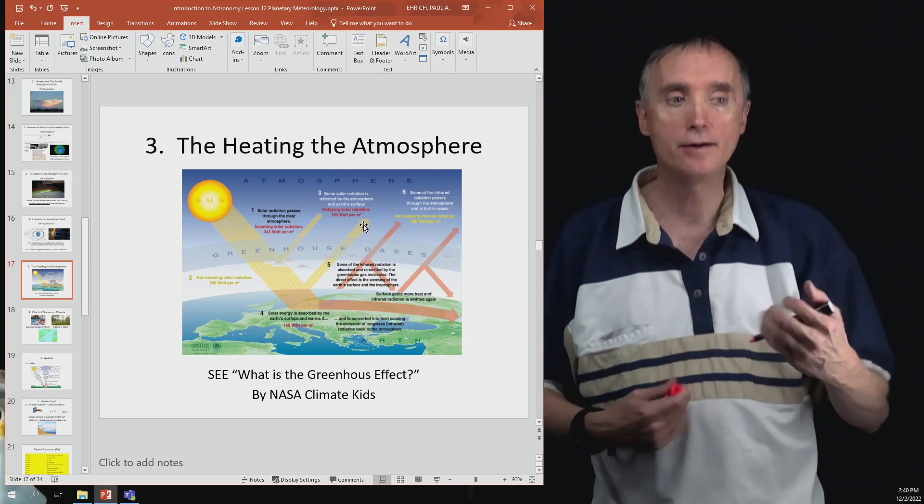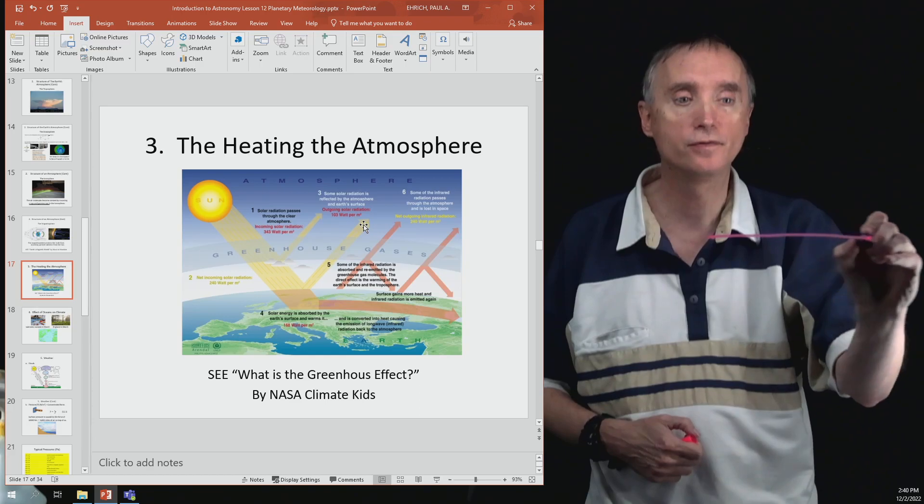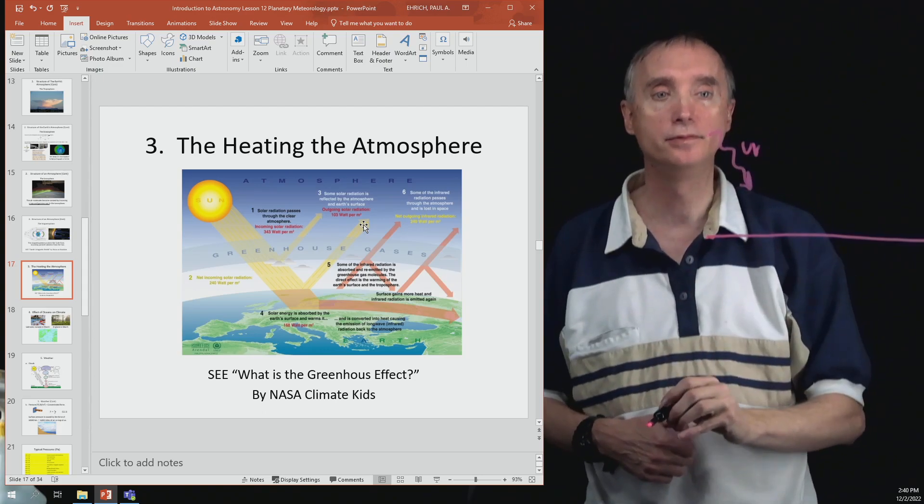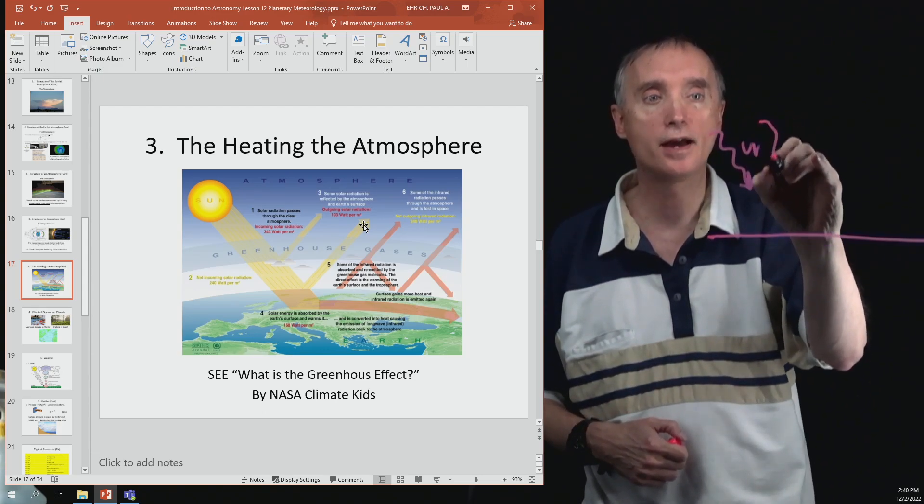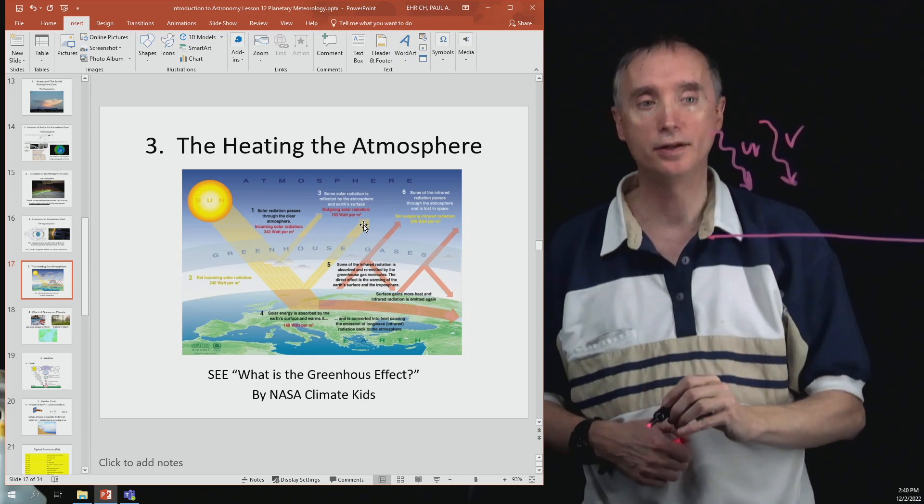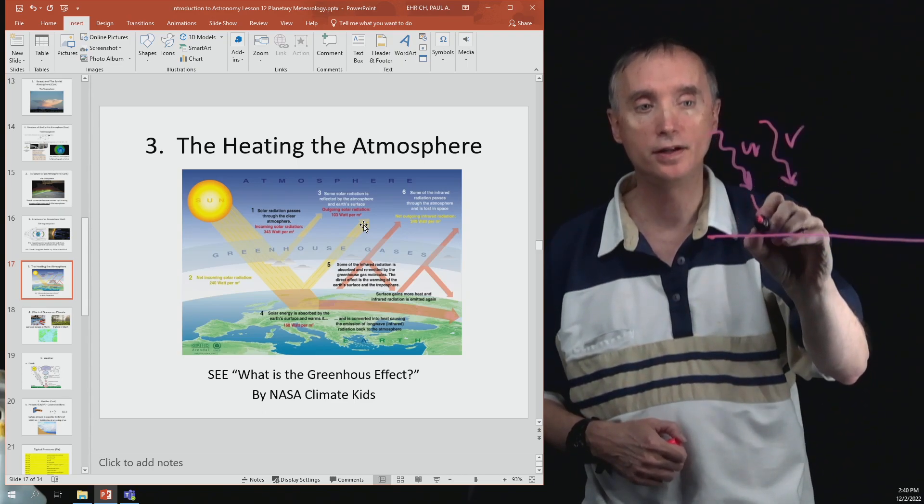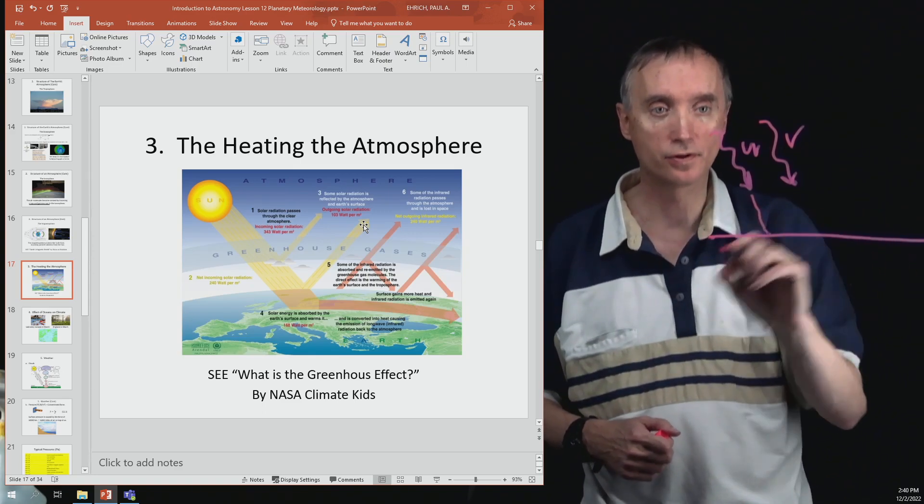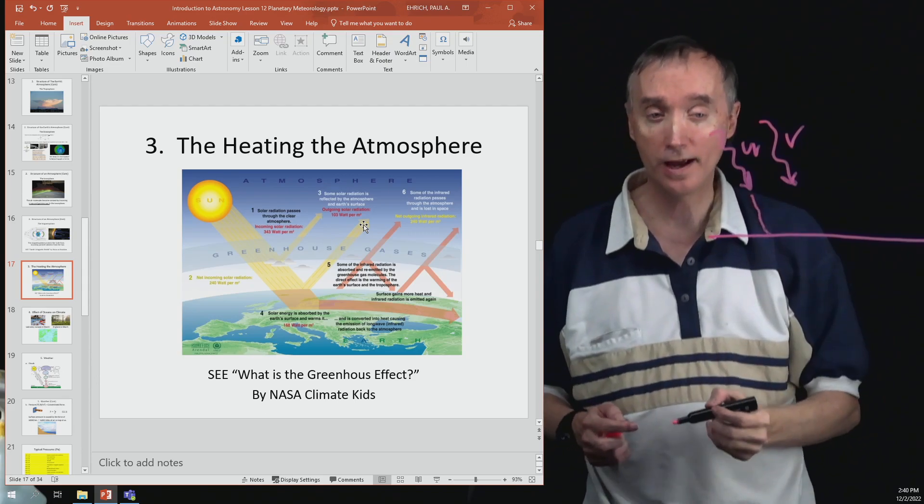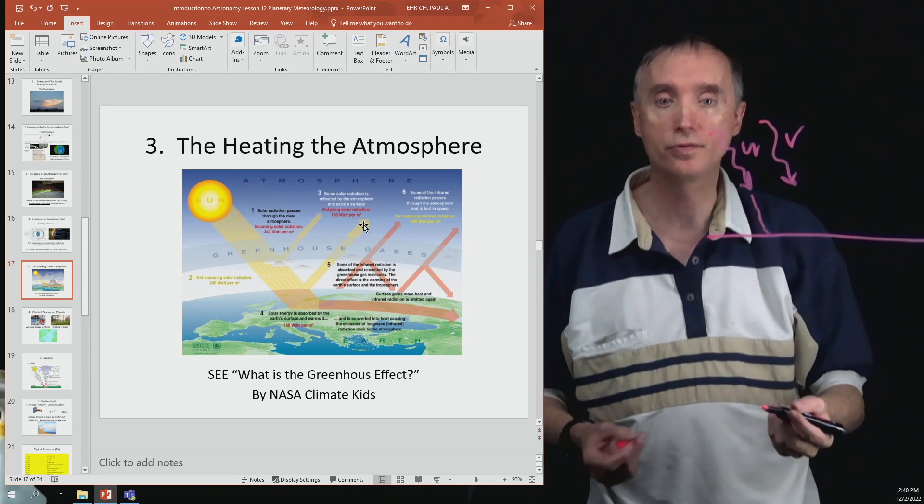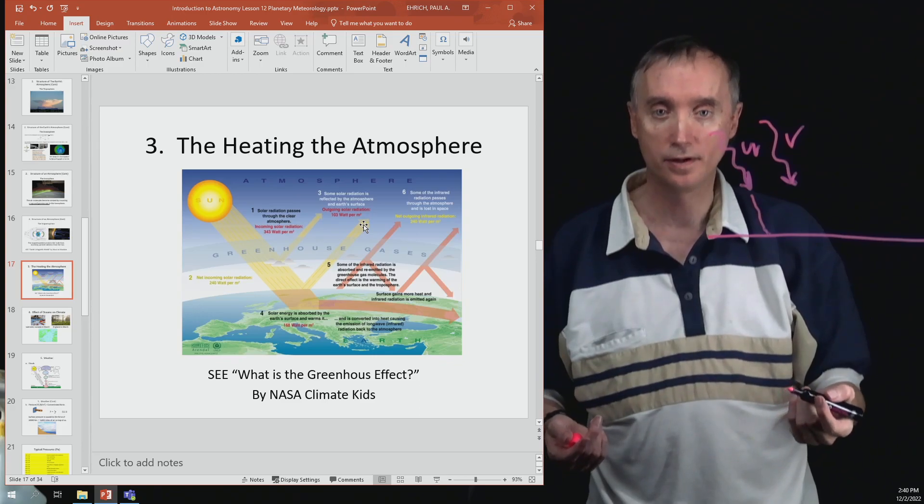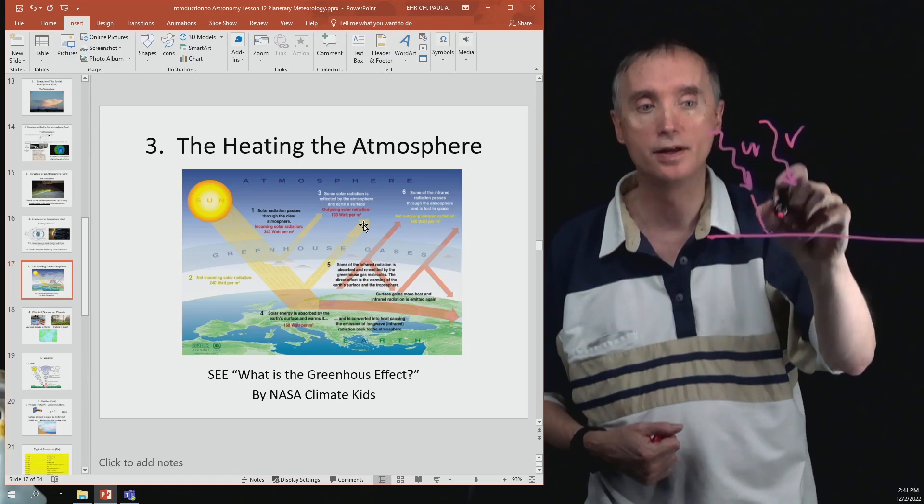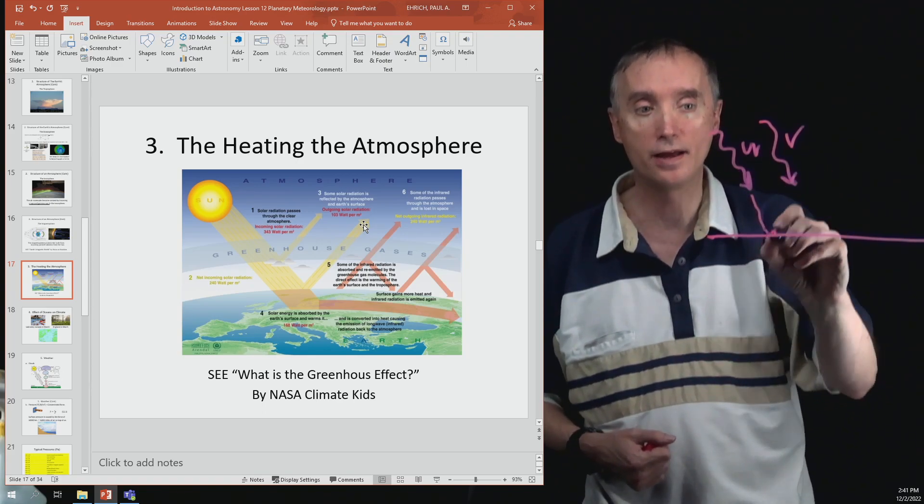So what happens is here's the Earth's surface down here, and then let's have some ultraviolet light coming in and also some visible light coming in. They're both going to hit the surface of the Earth and are going to be absorbed by the rocks here at the surface. Then what happens is that the surface of the Earth re-emits the light, but it changes it from ultraviolet and visible light into infrared.